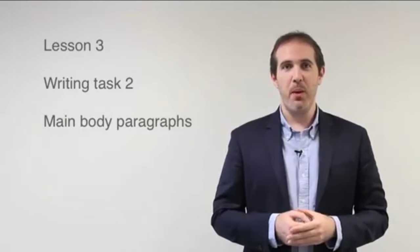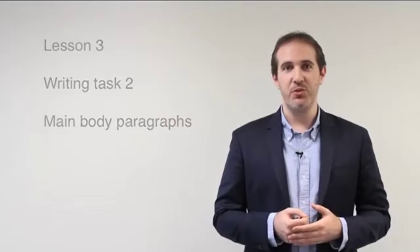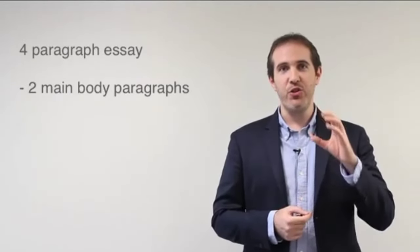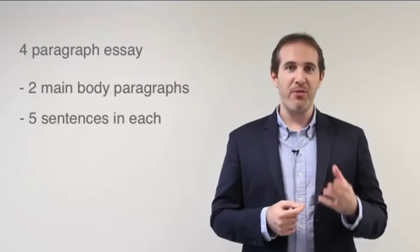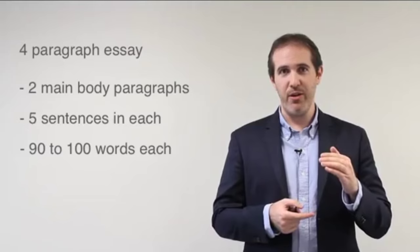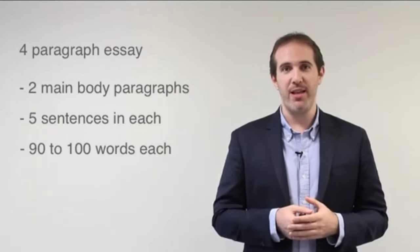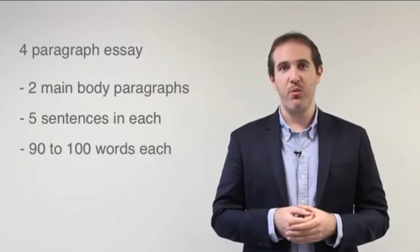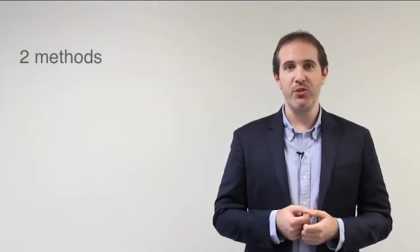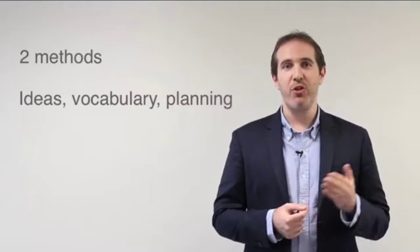Lesson 3, Writing Task 2, Main Body Paragraphs. In this lesson, I'm going to look at how to write a good main body paragraph for Writing Task 2. In our four-paragraph essay, we're going to write two main body paragraphs, each about five sentences long and around 90 to 100 words. So in total, the two main body paragraphs together add up to around 200 words — the main part of your essay, 200 out of the 250 words or more that you write. I'll show you two easy methods for writing main body paragraphs, and we'll also look at the importance of good ideas, good vocabulary, and planning. You can't write these main body paragraphs if you haven't done a plan beforehand.